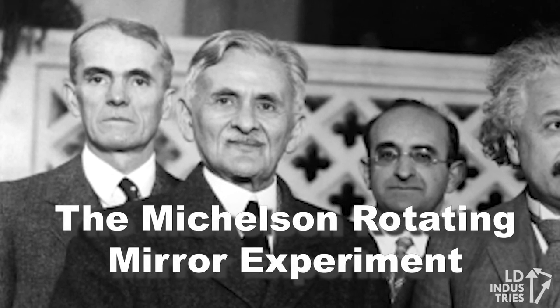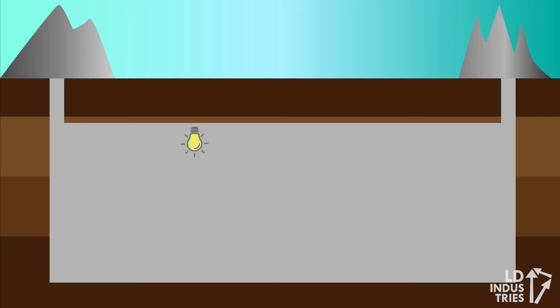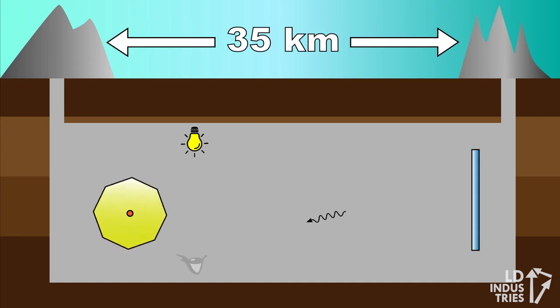This is the Mickelson rotating mirror experiment. A ray of light from a light source reflects off a rotating eight-sided mirror. Light travels a long distance. In this case, Mickelson had it move about 35 kilometers one way through an old abandoned mine shaft between two mountains in California.